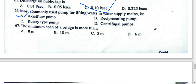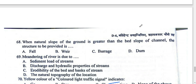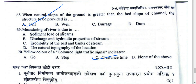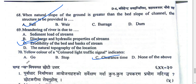The minimum span of a bridge is more than 6 meters. When the natural slope of the ground is greater than the bed slope of the canal, we provide a fall (drop) in the canal. The meandering of a river is due to the sediment load of the stream and the erodibility of the bed and bank.